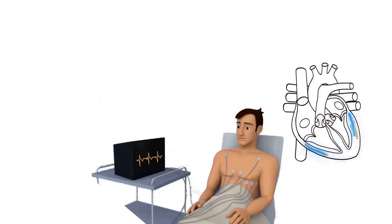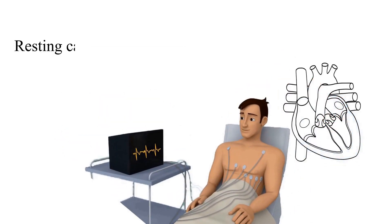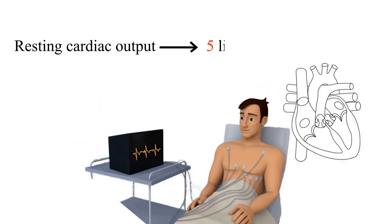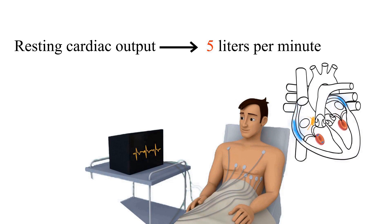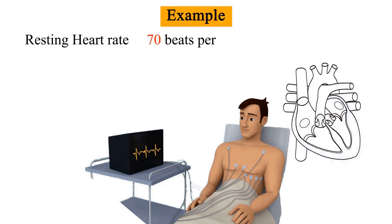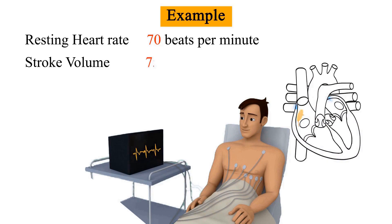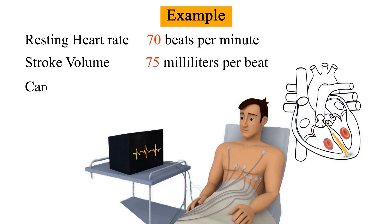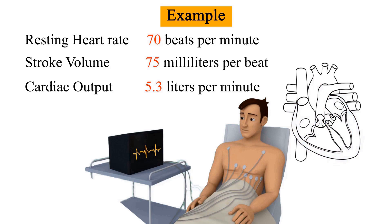For a healthy adult, a resting cardiac output is approximately 5 liters per minute. For example, if a person's resting heart rate is 70 beats per minute and stroke volume is 75 milliliters per beat, cardiac output is 5.3 liters per minute.